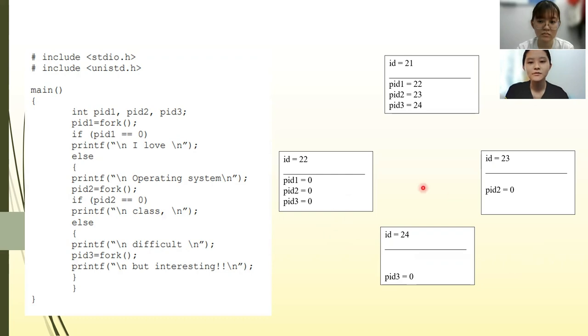At ID equals to 23, PID2 equals to 0, as it creates a child process. When PID2 enters the if-else condition, PID1 will take back its integer value, which is 22, while PID3 at this stage is equal to 0, as no process is created.